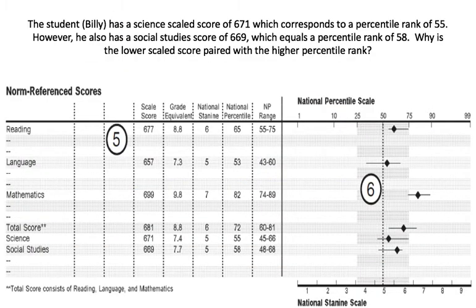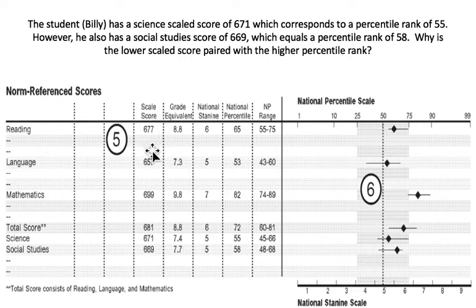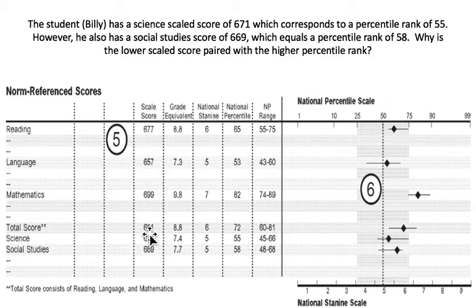Suppose that Billy has a science scaled score of 671, which corresponds to a percentile rank of 55. However, he also has a social studies score of 669 — slightly lower — which is equal to a percentile rank of 58, which is slightly higher. How can the lower scaled score be paired with the higher percentile rank? This goes back to the idea that scaled scores vary from content area to content area and across grades. In any grade, these values will mean different things. So 677 in reading is different than in language, math, science, and social studies. We don't expect a one-to-one correspondence between scaled scores and the national percentile rank.